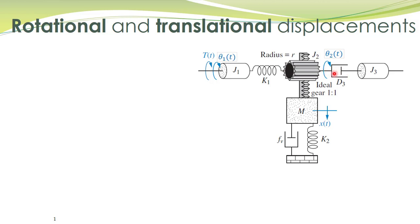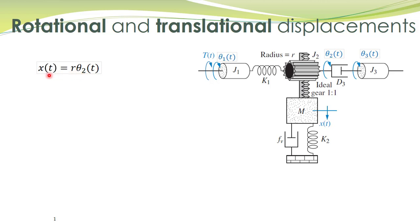Next we have a damper, and the other end of the damper can have a different displacement — let's call it theta3(t). Furthermore, this end of this inertial element also has the same displacement theta3(t). The rotation in this pulley will produce a linear displacement x(t) in this rack. This linear displacement x(t) is related to the angular displacement theta2(t) by a given expression. We see that x(t) is linearly dependent upon theta2(t), because x(t) can be obtained by simply multiplying theta2(t) by a constant.